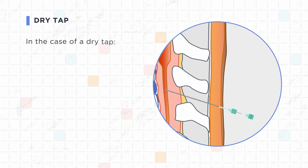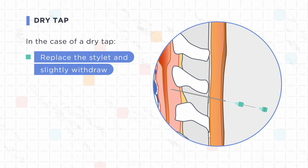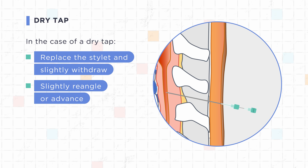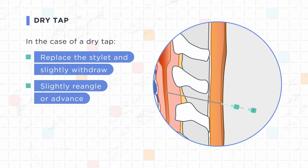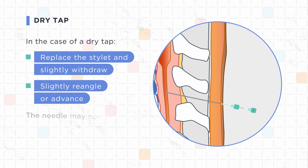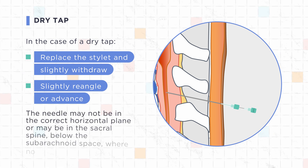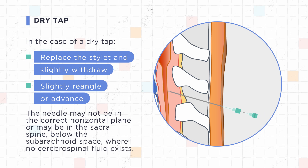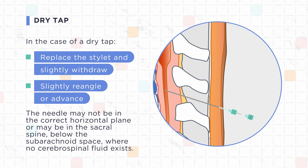In the case of a dry tap, replace the stylet and withdraw the needle slightly, re-angle or reposition, then remove the stylet, advance, and re-check for cerebrospinal fluid. The needle may not be in the correct horizontal plane or may be in the sacral spine below the subarachnoid space, where no cerebrospinal fluid exists.